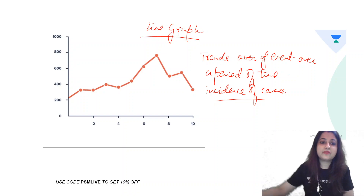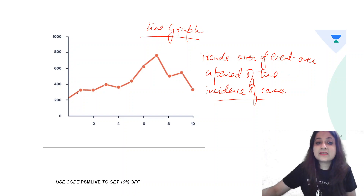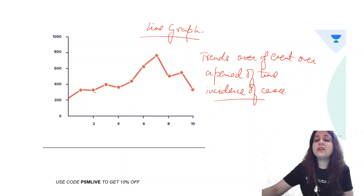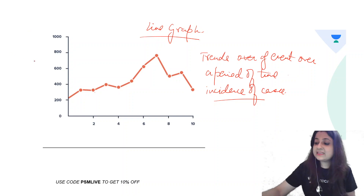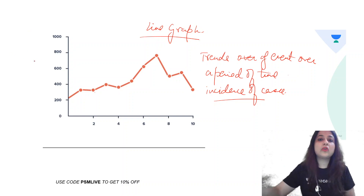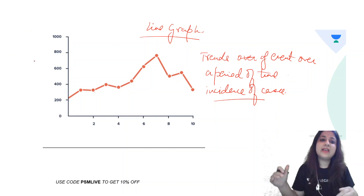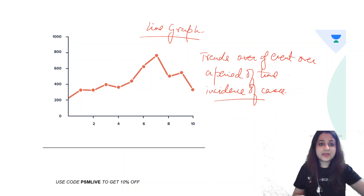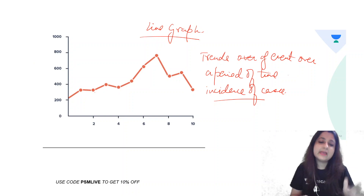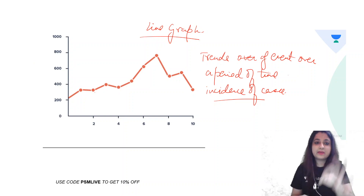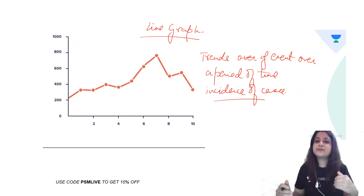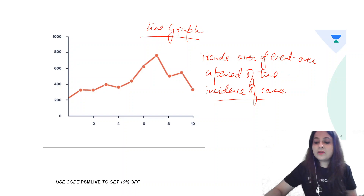A striking feature of the line graph is that it can increase and it can decrease — it can show a dip as well. So increase and decrease are always a part of the line graph. For example, cases may rise from January to March and then fall in April.